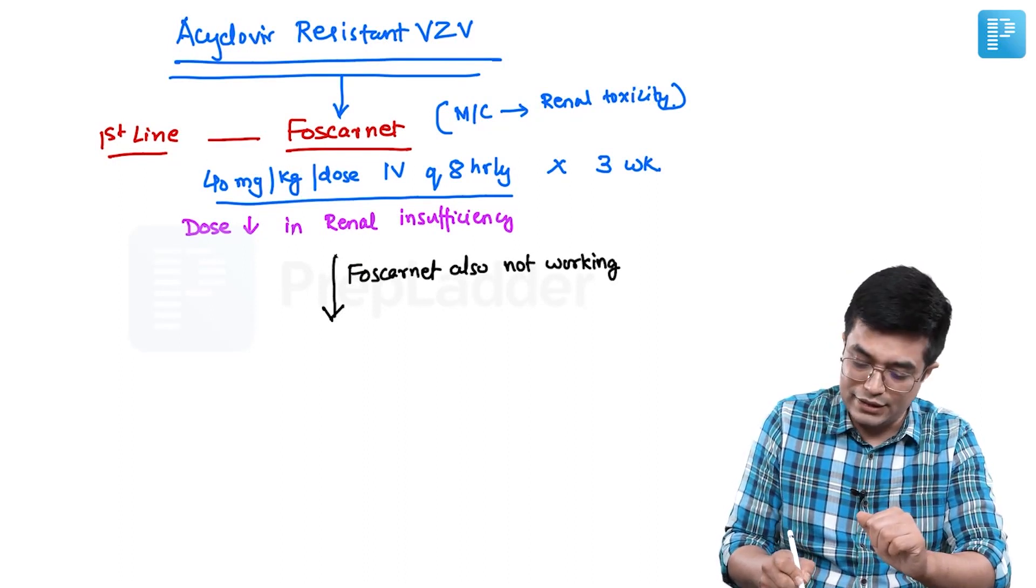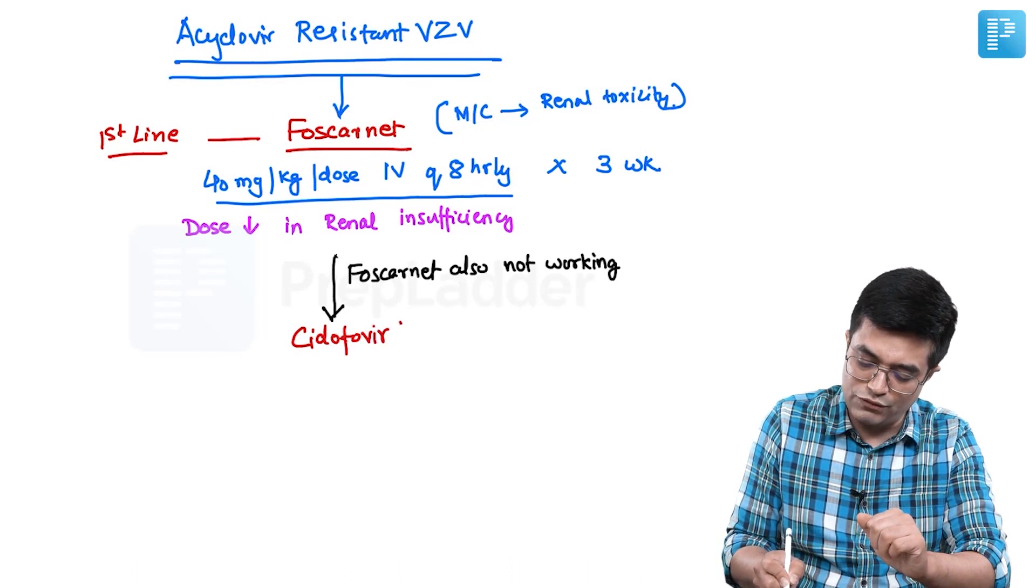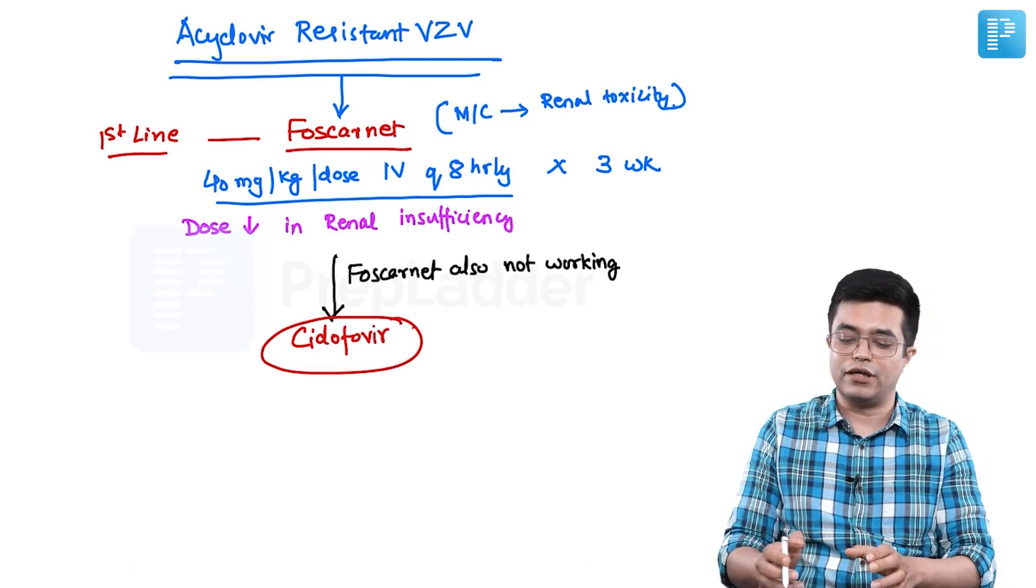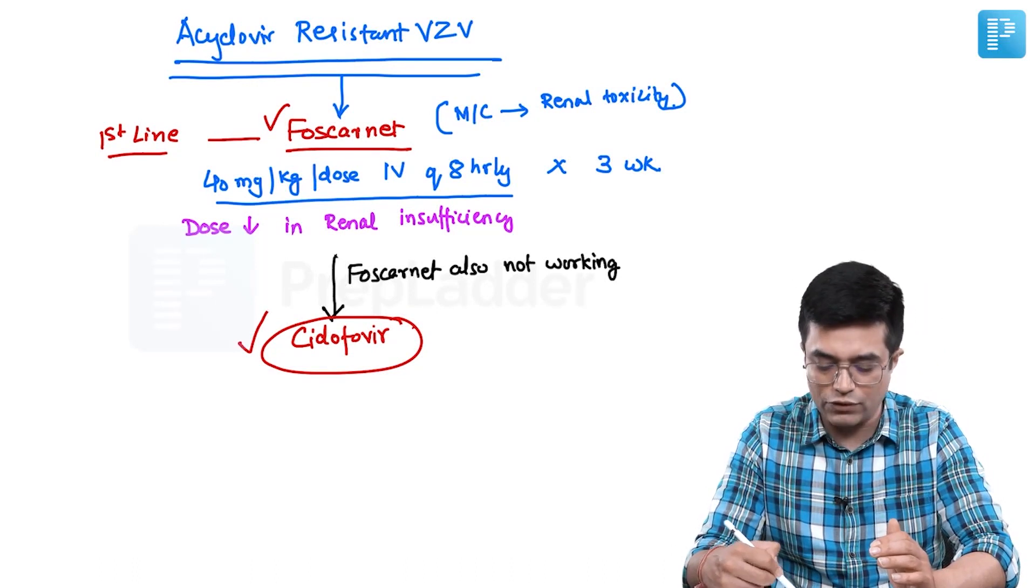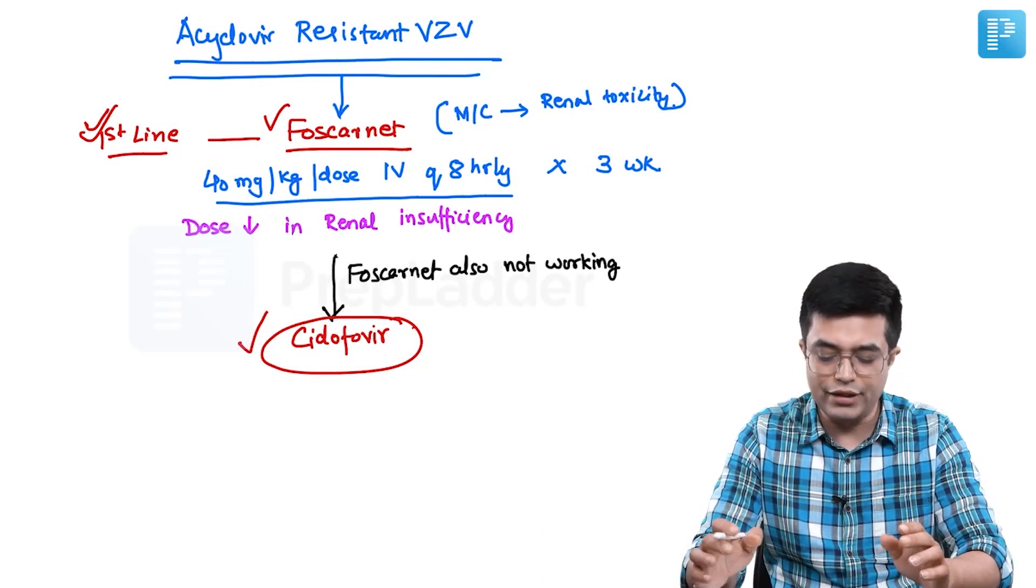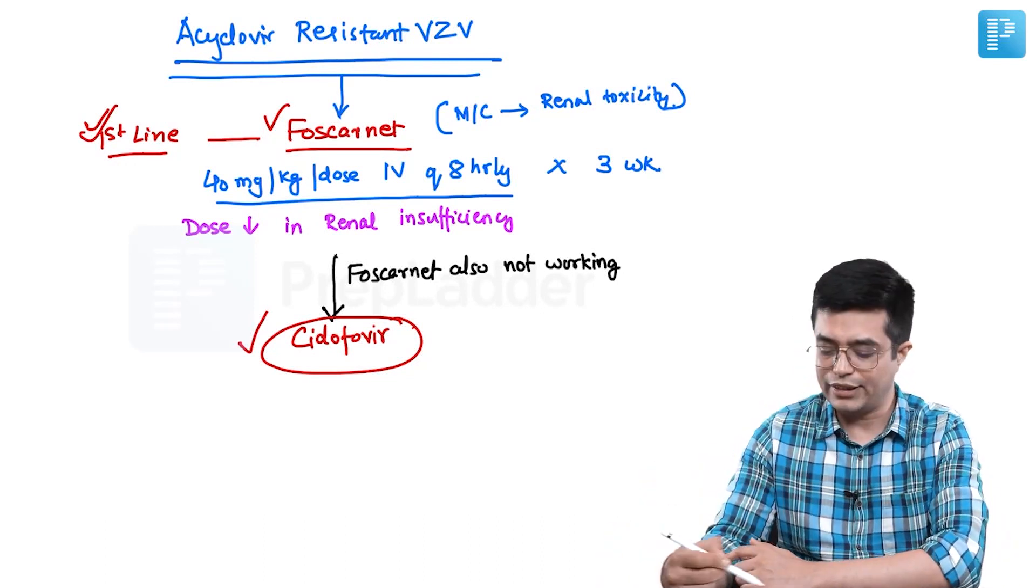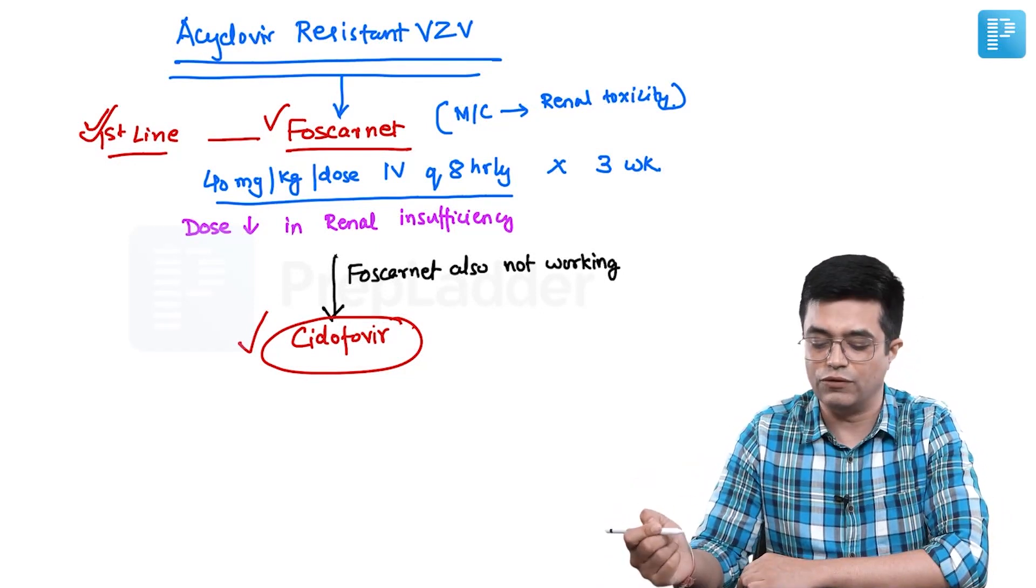Cidofovir is useful in patients where Foscarnet is not working. So in both acyclovir-resistant VZV, you can use both Foscarnet and Cidofovir. Both are toxic agents, but the first-line agent will always be Foscarnet. Only when Foscarnet is also not acting or due to renal toxicity you cannot use it, then we go for Cidofovir in these patients.